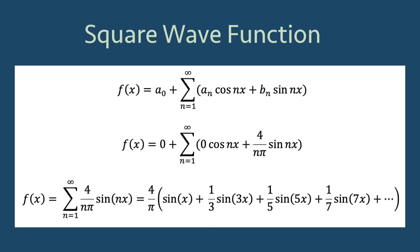Then, by our theorem, the series for f(x) becomes the sum from n=1 to infinity of 4/(nπ)*sin(nx) which equals 4/π times the quantity sin(x) + 1/3*sin(3x) + 1/5*sin(5x) + 1/7*sin(7x), etc.